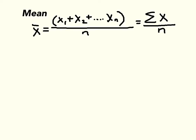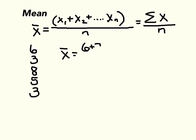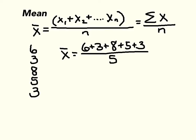So we're going to calculate the mean for a small set of numbers. Here are our five numbers, and we're going to calculate the mean. x-bar equals the sum of all the numbers over the total number of numbers. We have five numbers, so it's the sum of all the numbers over five, which equals 25 over 5. That equals 5. So the mean, x-bar, of this sample is 5.